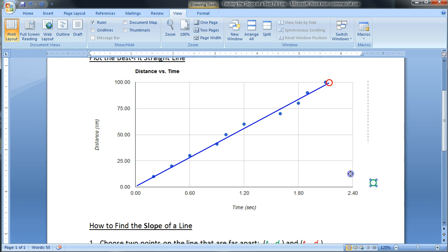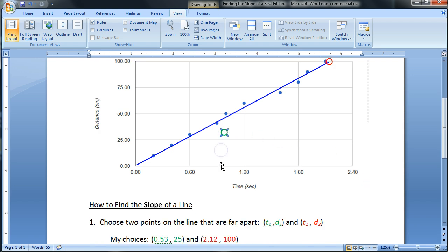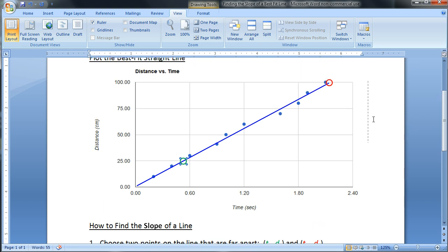I'm going to choose another point kind of far away. We're choosing two points, and here's one where it looks like it crosses a grid line. I'm going to choose that one where it crosses at 25. So there are my two points I've chosen, T1 and D1, and T2 and D2. Now that I know this D2 here is 100, what is the T2 associated with this point?